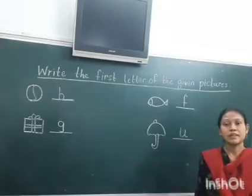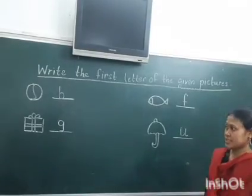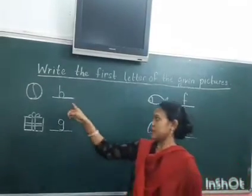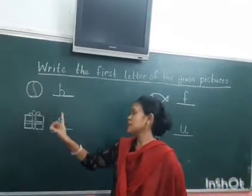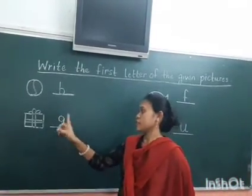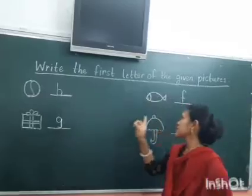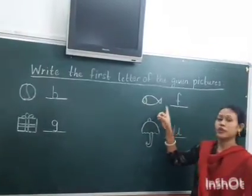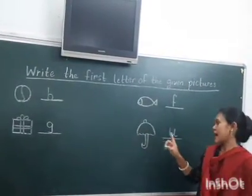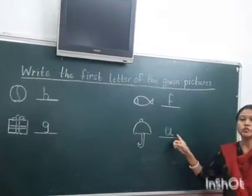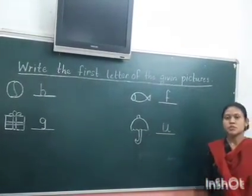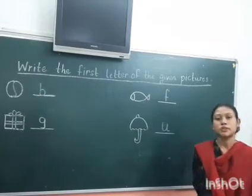So one more time, let's repeat. B for ball. G for gift. F for fish. And U for amrima.